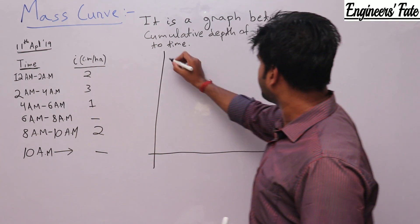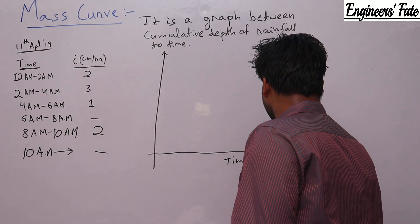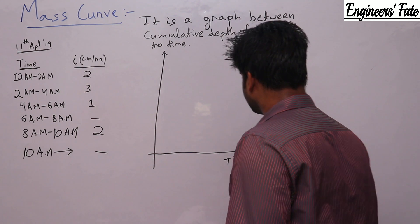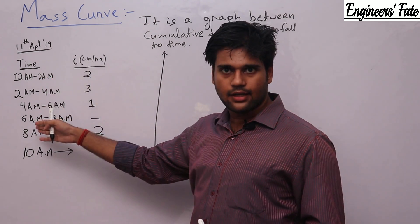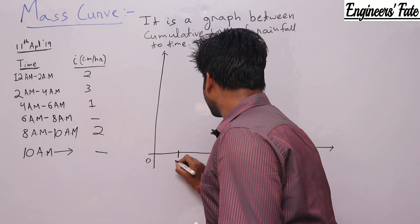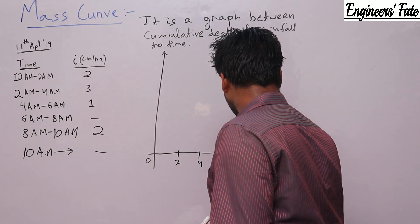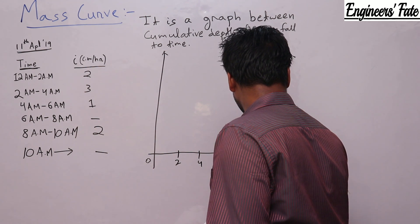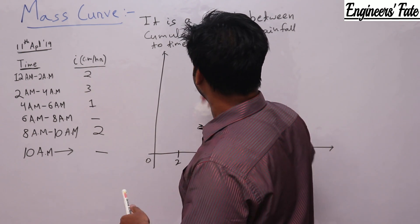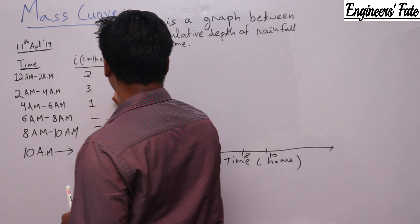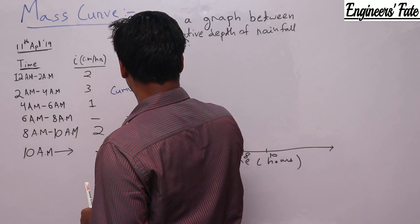To draw a mass curve, I take time on the x-axis in hours, starting from 0 at 12 am, with each interval of 2 hours: 2, 4, 6, 8, and 10.